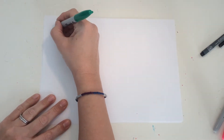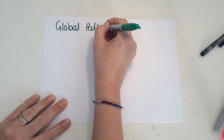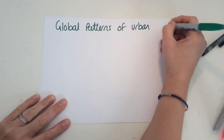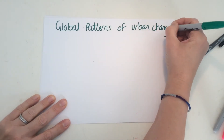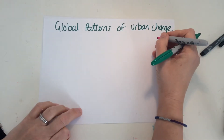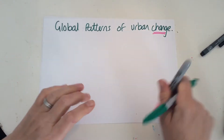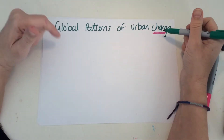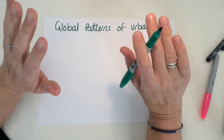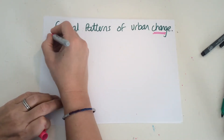You need to know about global patterns of urban change. The word I'm going to keep coming back to over and over again is 'change', because so much of this topic is about how cities are changing, whether they're in LICs or HICs. So let's get that vocabulary sorted.